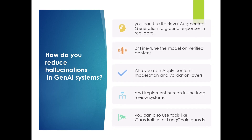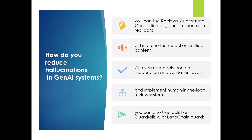Next question: how do you reduce hallucinations in generative AI systems? You can use Retrieval Augmented Generation to ground responses in real data, or fine-tune the model on verified content. Also apply content moderation and validation layers, implement human-in-the-loop review systems, and use tools like Guardrails AI or LangChain guards.